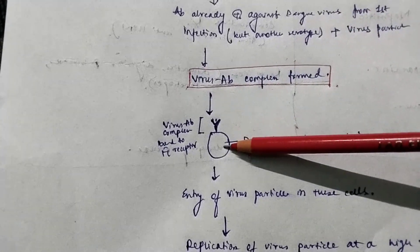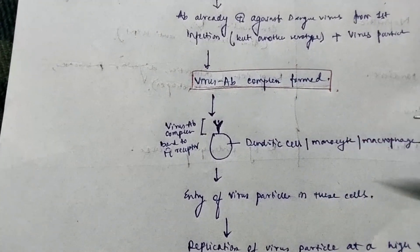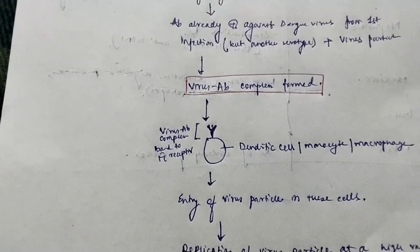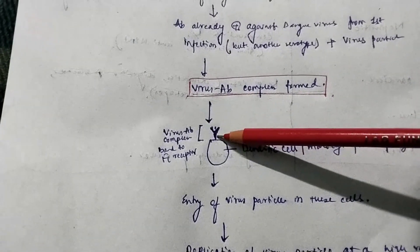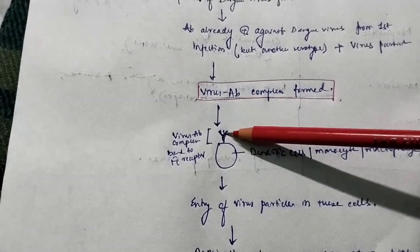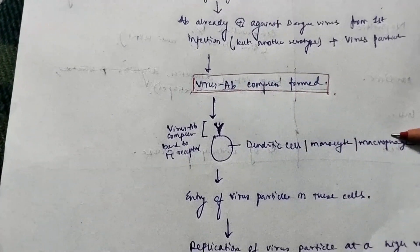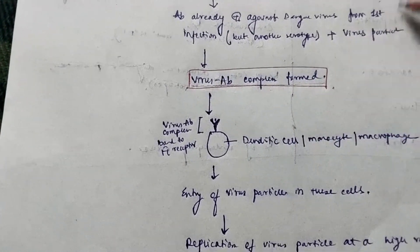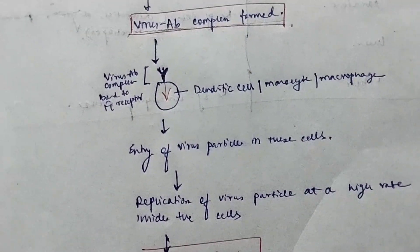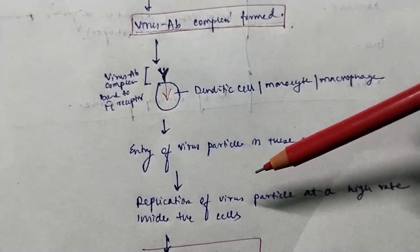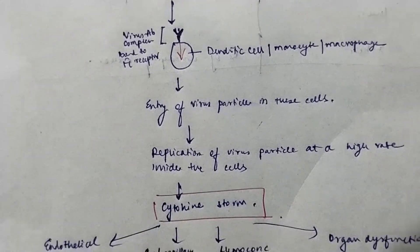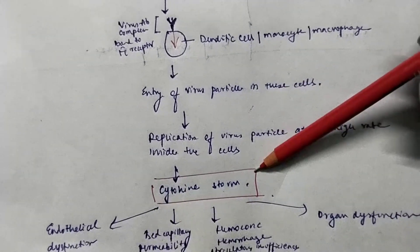The dendritic cells, macrophages, or monocytes in your blood have FC receptors. This virus-antibody complex will bind to the FC receptors of these cells, which facilitates the entry of these virus particles into the cells. Once inside, there will be replication of the virus particles at a higher rate.